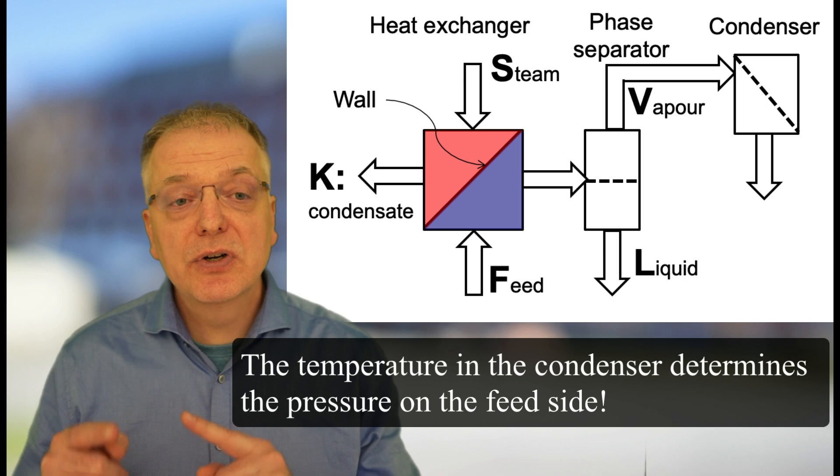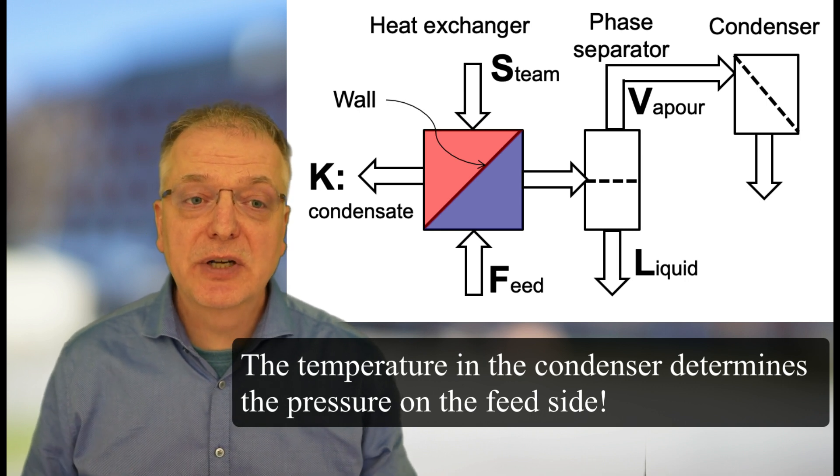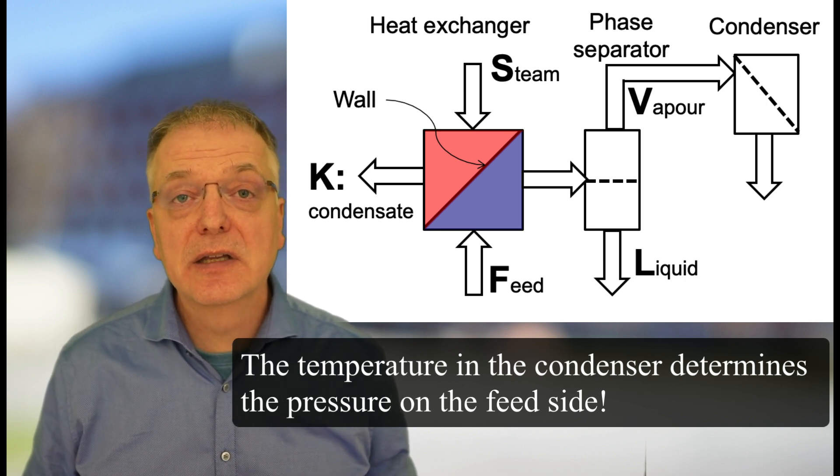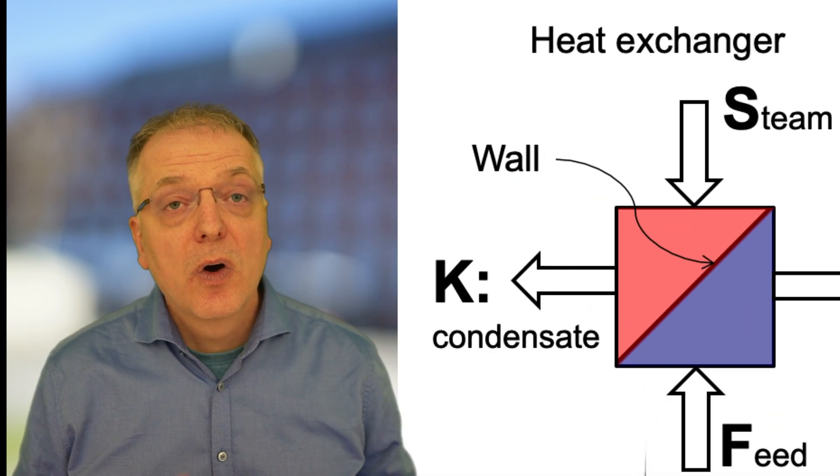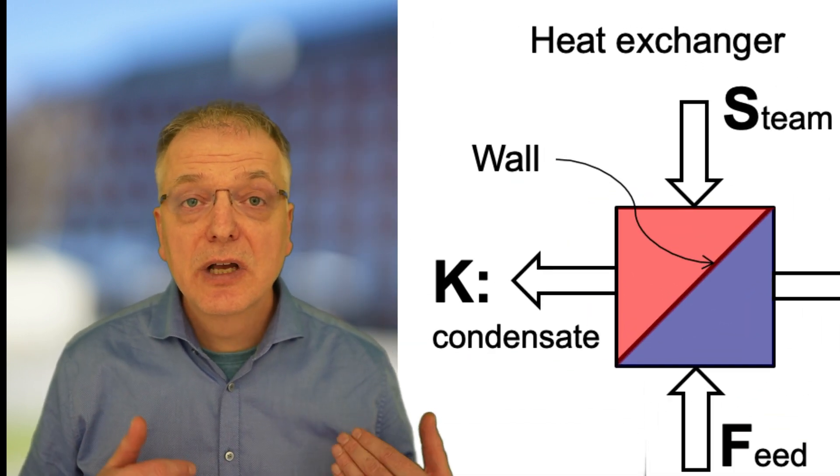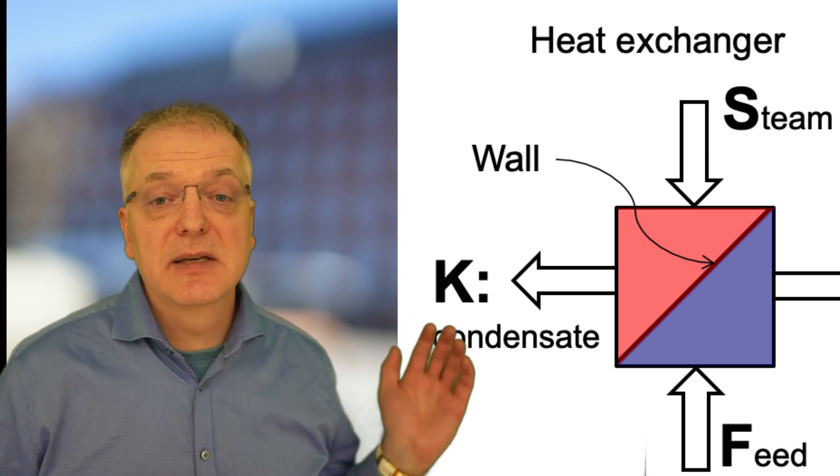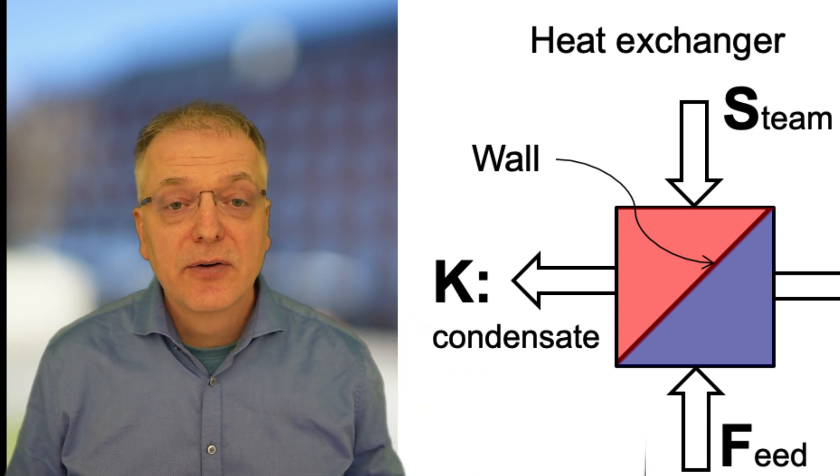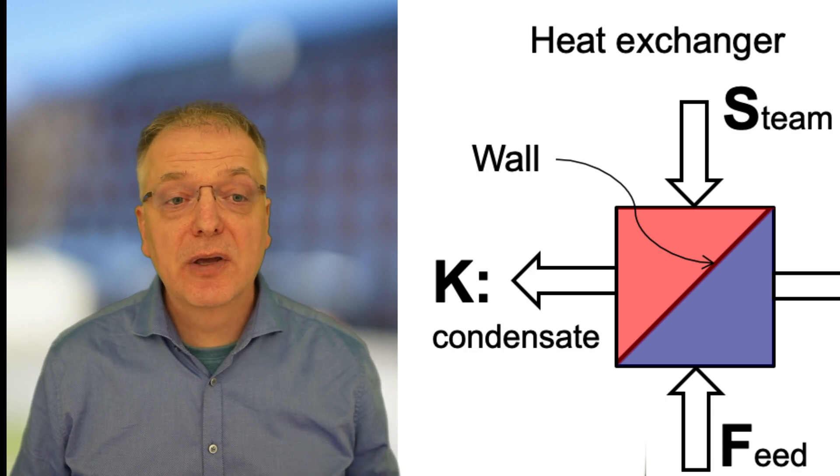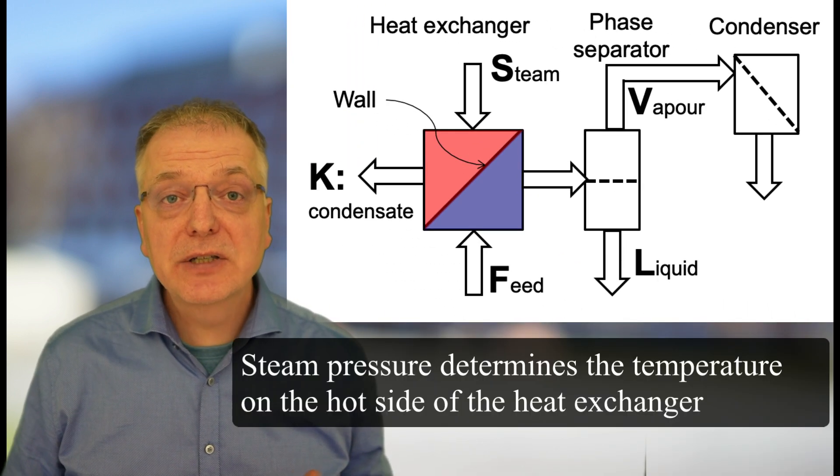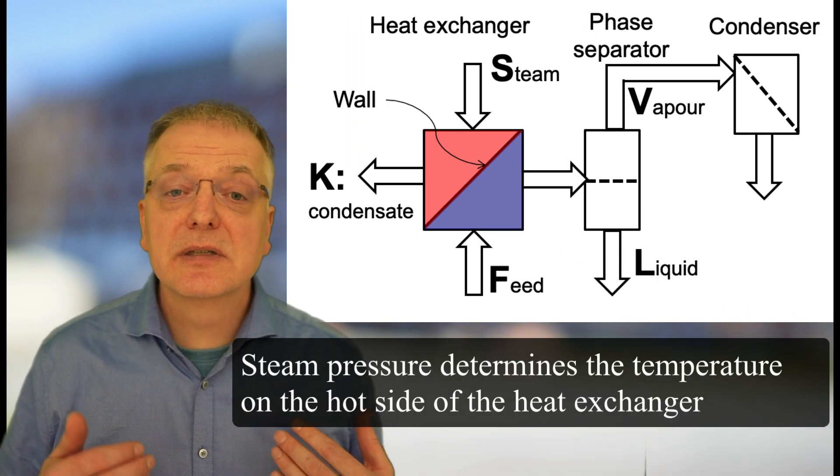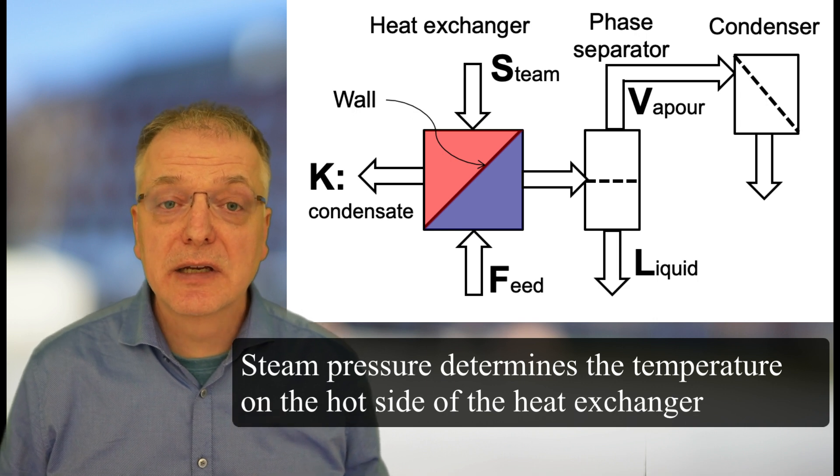It is the temperature in the condenser that determines the pressure of the feed side of the heat exchanger. On the hot side of the heat exchanger, we usually have condensing steam, S. That is, we take in steam and let that condense, releasing the evaporation enthalpy of the steam. The pressure of the steam determines the temperature on the hot side of the heat exchanger.